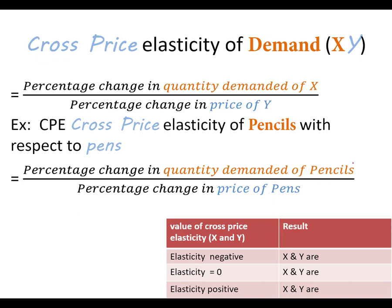If we get a negative number for cross-price elasticity, that means the goods are complements. If we get a positive number, they're substitutes. If the elasticity equals zero, that means the price of one good changes and the quantity demanded for the other good doesn't change — those goods are unrelated.